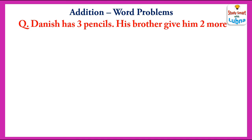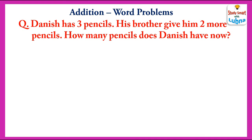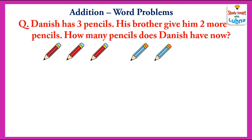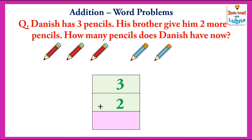Another problem. Danish has three pencils, his brother gives him two more pencils. How many pencils does Danish have now? For this we will add three pencils and two pencils. Three plus two equals five, so Danish has total five pencils.